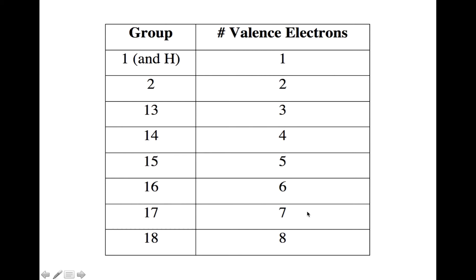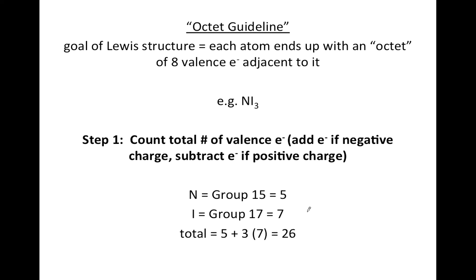This table shows you the relationship between the column elements and the number of valence electrons. Column one has one valence, column two has two valence, and columns thirteen to eighteen have three through eight valence electrons as shown on the table. You may want to refer back to this table as we draw some of the Lewis structures later on in the video.